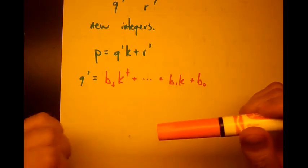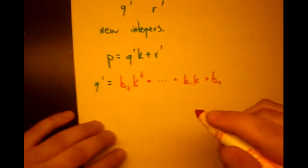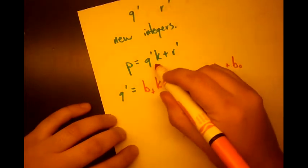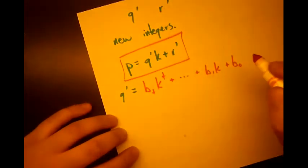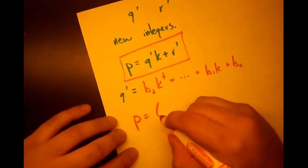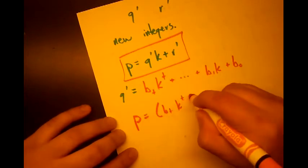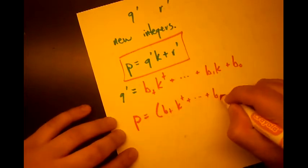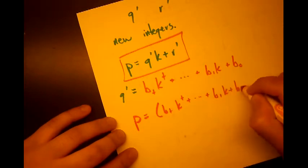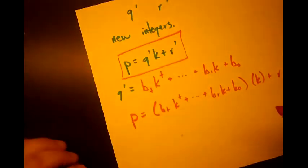And again we can put this representation into our new equation right here. And say p equals, and q prime is just b sub t k to the t plus... b naught, b naught, times k, plus r prime. Okay.